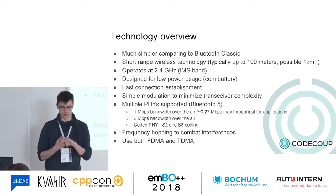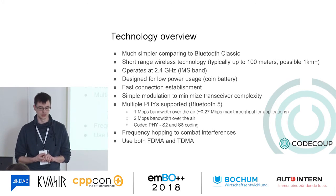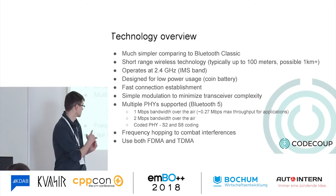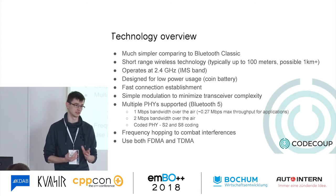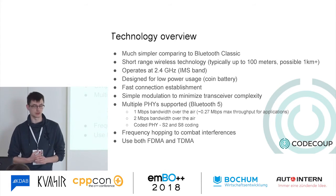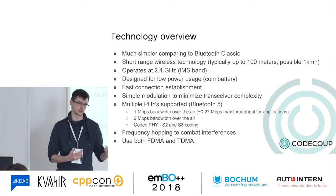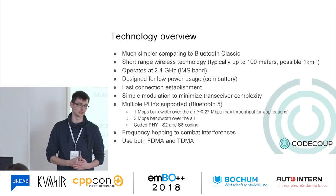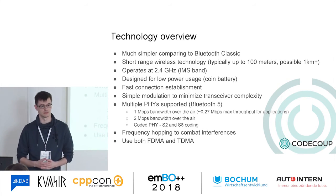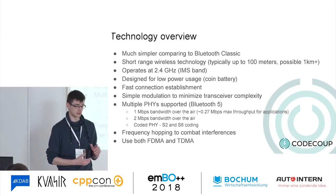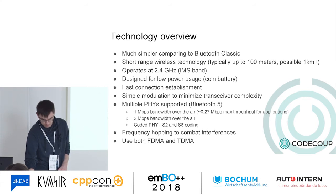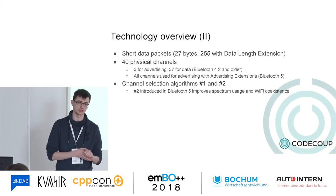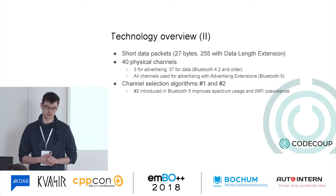Very simple modulation. With Bluetooth 5, two new PHYs are added. With 1 megabit you could get maybe one quarter megabytes per second for your application; with 2 megabit bandwidth this doubles. With coded PHY, one bit on the radio is coded with two or eight symbols depending on configuration — you get lower throughput but gain range at the edge where bit errors start showing up. Data packets are very short at 27 bytes, and with data length extensions you can increase that to 255 bytes.